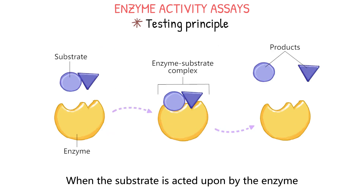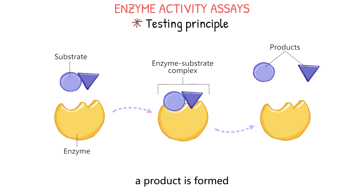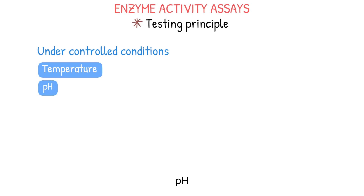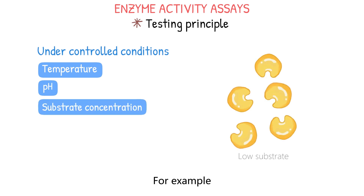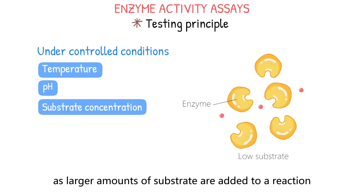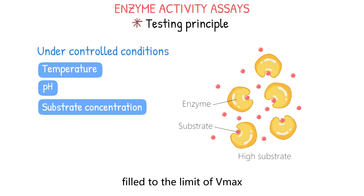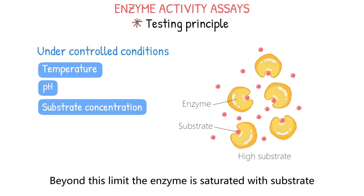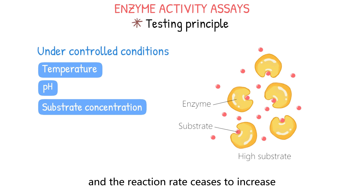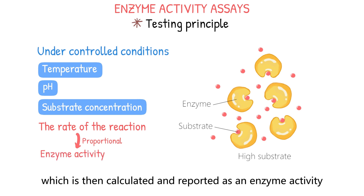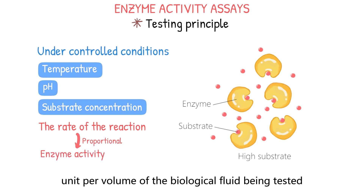When the substrate is acted upon by the enzyme, a product is formed or the substrate is depleted. The rate of reaction is measured under controlled conditions such as temperature, pH, and substrate concentration. For example, as larger amounts of substrate are added to a reaction, the available enzyme binding sites become filled to the limit of Vmax. Beyond this limit, the enzyme is saturated with substrate, and the reaction rate ceases to increase. The rate of reaction is proportional to the enzyme activity, which is then calculated and reported as enzyme activity per unit per volume of the biological fluid being tested.